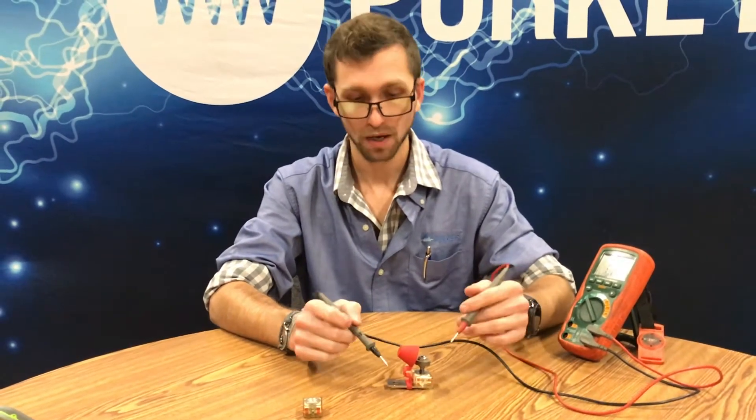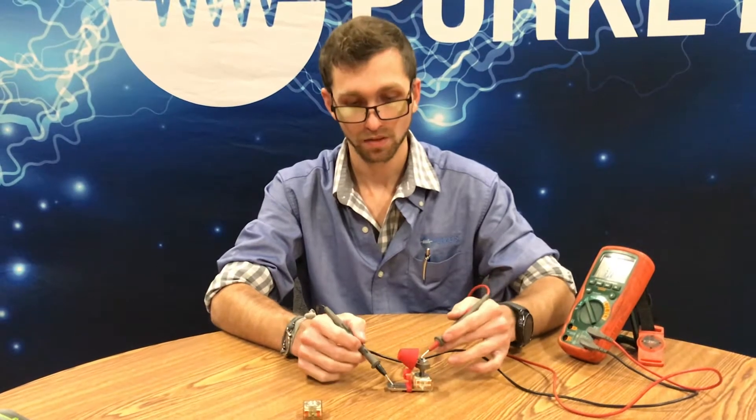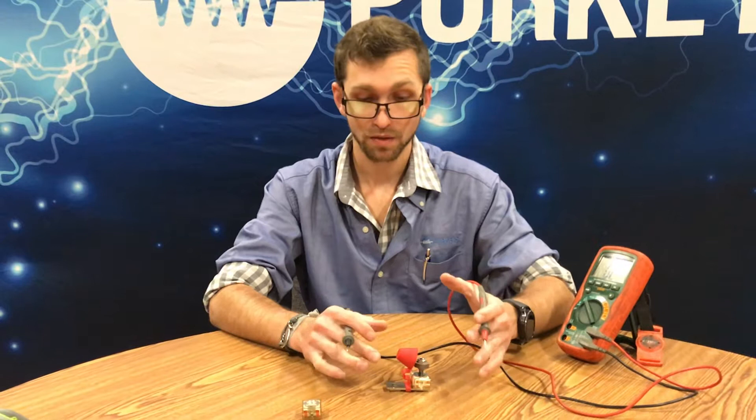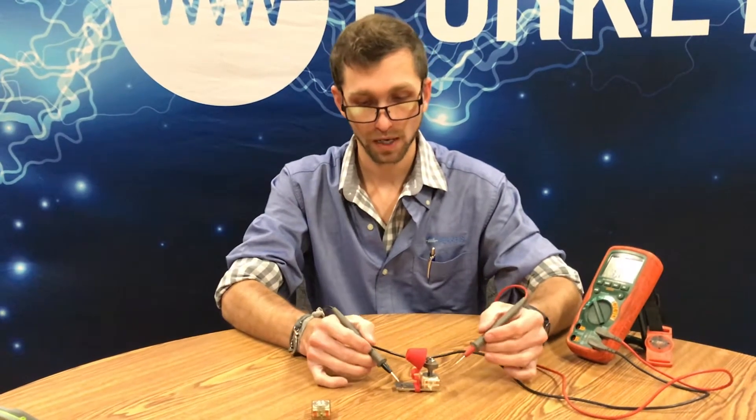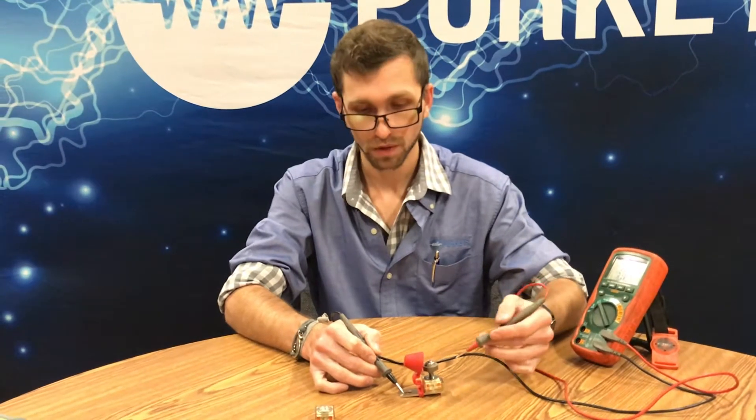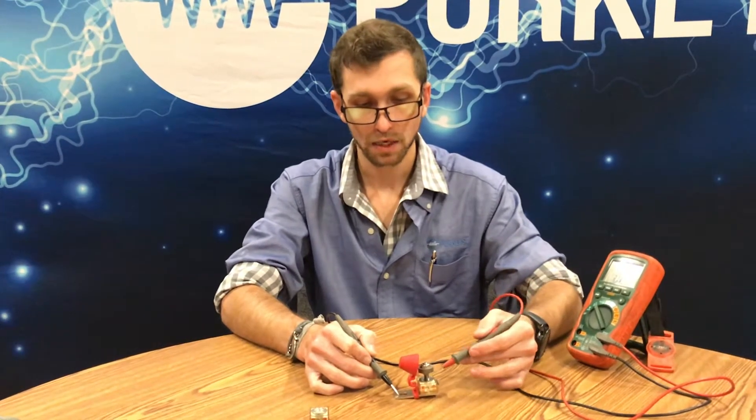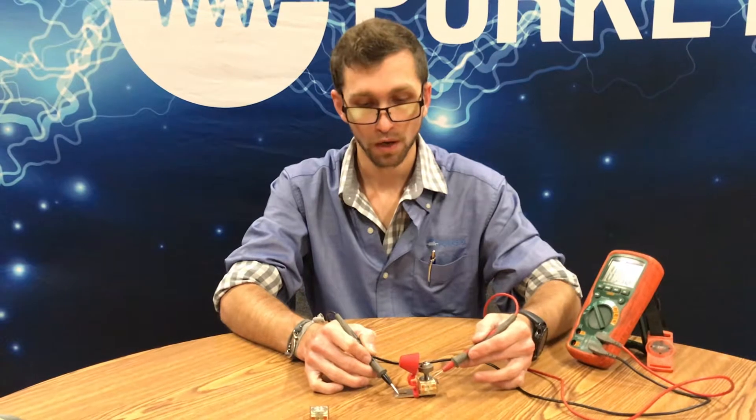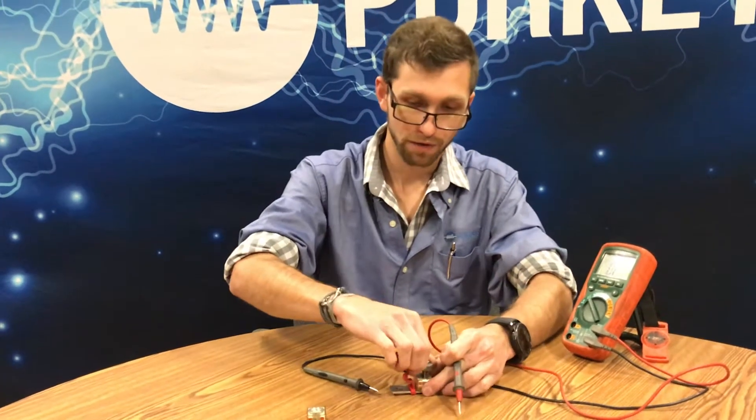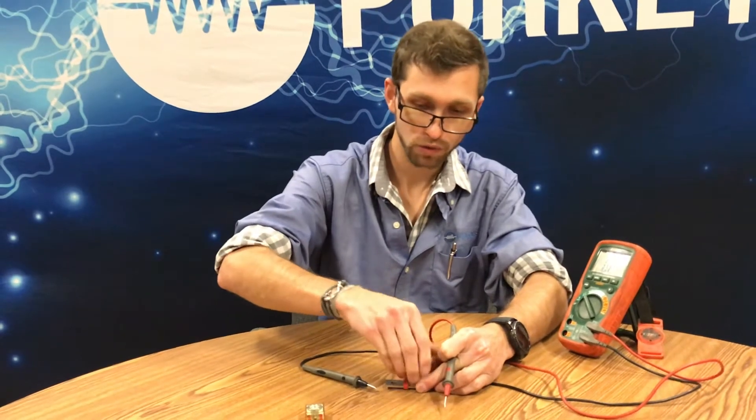The way that you would test this fuse cube while still being mounted on the bracket would be to go from one end of the bracket, preferably with your negative lead, and then go into the top like we did before with just the fuse by itself.